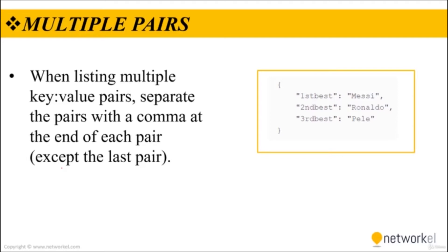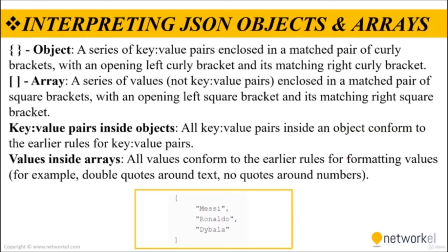On JSON syntax, when we need to list multiple key-value pairs, we need to separate the pairs with a comma. As you can see here, there is a first comma and a second comma. But where is the third comma? We don't use a comma at the end of the last key-value pair.